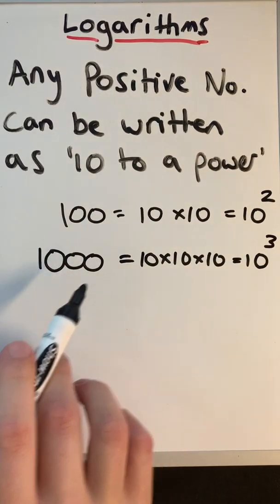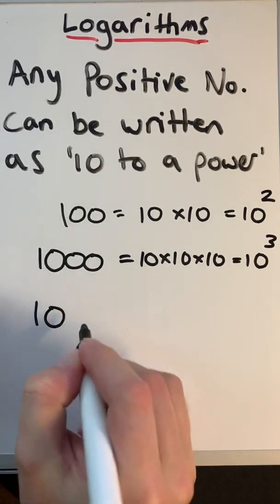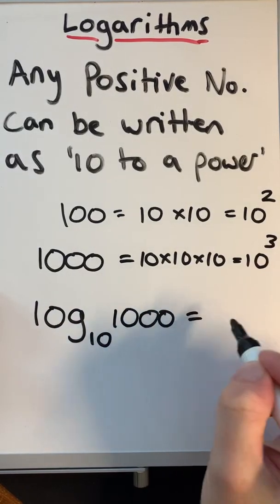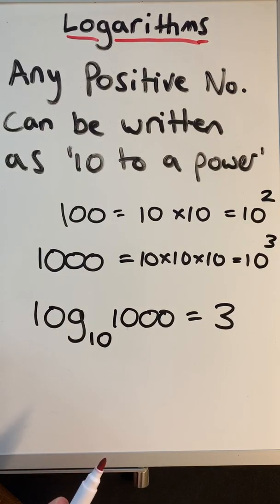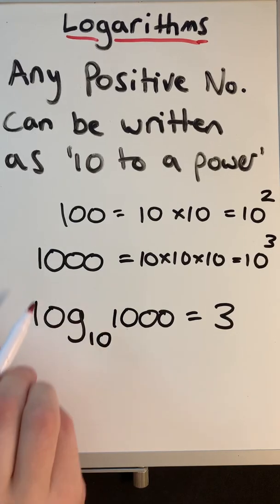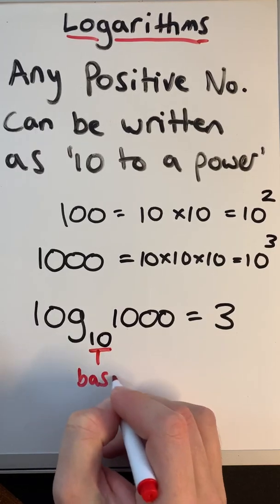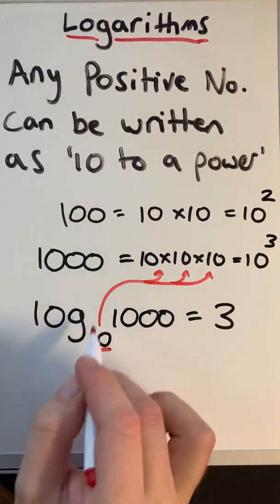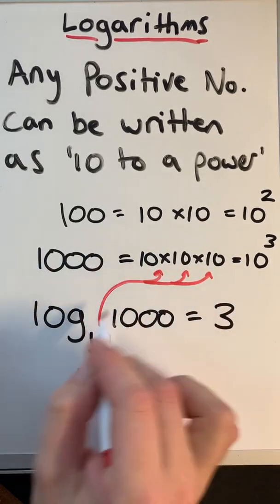Any positive numbers we can write as 10 to a power. This is where logarithms come in. We can say that log to the base 10 of a thousand equals 3. Relating back to what we wrote, the base is the number that we were multiplying by itself to get this number — the base is the number we're multiplying together to get the result.